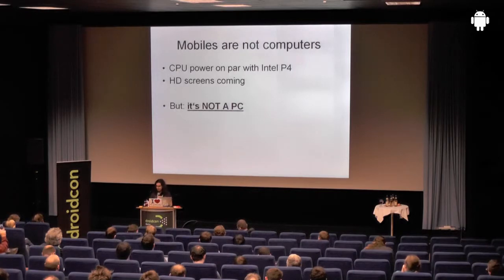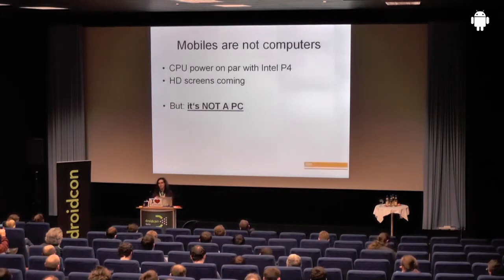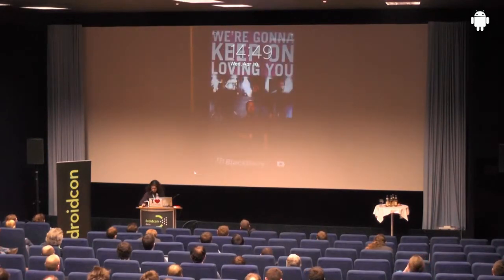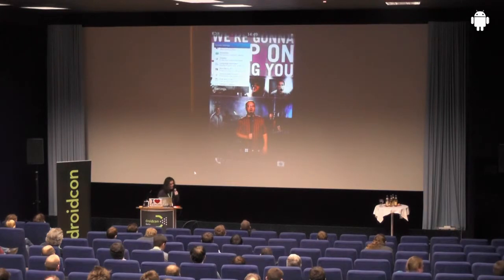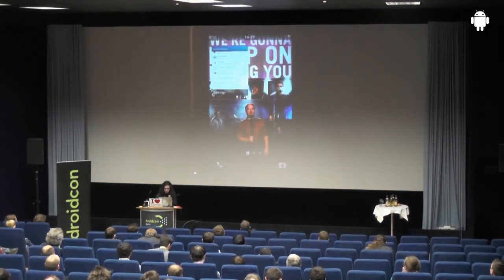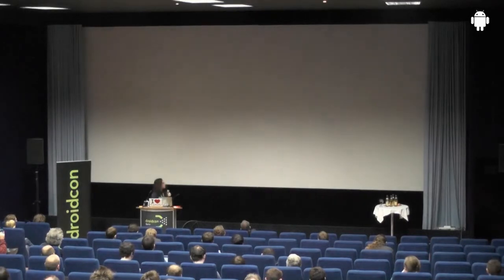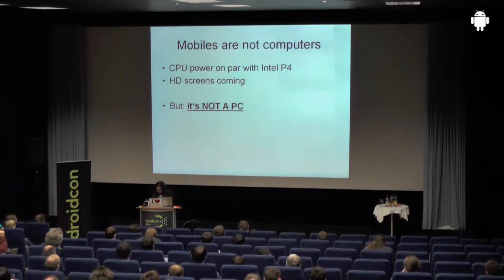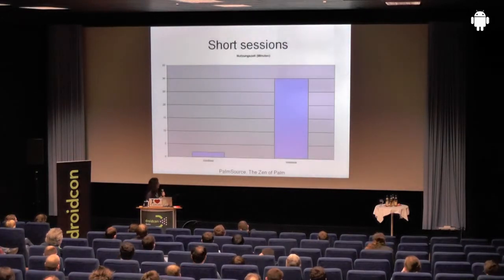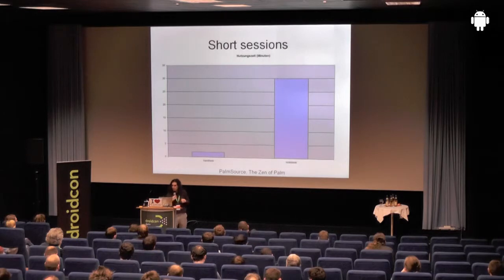Ten years ago this was clear. You had a Palm 3C with a 20 megahertz processor and 8 megabytes of RAM. Today we have things like this — the BB10, which has a dual-core processor with computing performance on par with Pentium 4 processors. Very soon we'll also have HD screens. But still, even the BlackBerry 10 and the Galaxy S4 is not a PC. To understand this, we have to go back to PalmSource's basic research into user behavior of handhelds and smartphones.